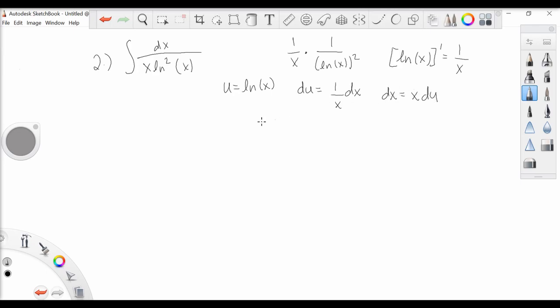Back to our original integral, we now have du times x divided by x times u squared. Here it is again. The x's cancel nicely.